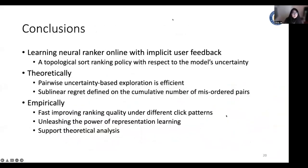So in this paper, we focus on learning neural ranker online with implicit user feedback. We propose a topological sort ranking policy with respect to the model's uncertainty. In this way, we balance the exploration and exploitation for online learning to rank. Theoretically, we proved that the pairwise uncertainty based exploration is efficient. And we proved a sublinear regret bound, which defined on the cumulative number of misordered pairs. Empirically, we proved that our proposed model can fast improve the ranking quality on different click patterns. And we can use this neural network to unleash the power of representation learning. And the empirical result supports our theoretical analysis.